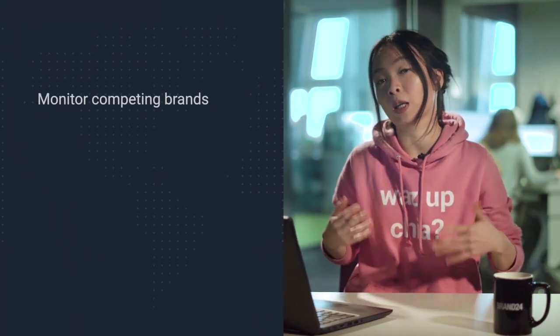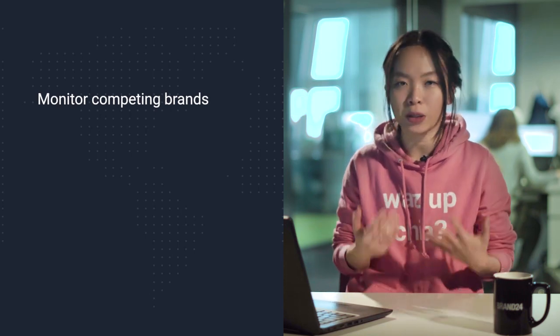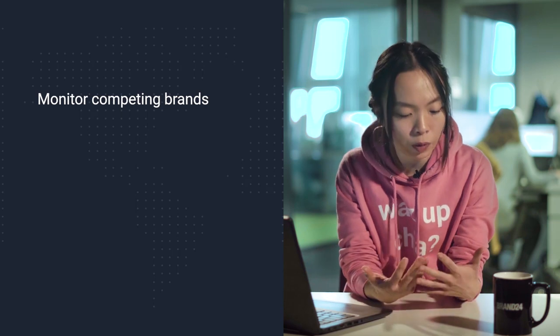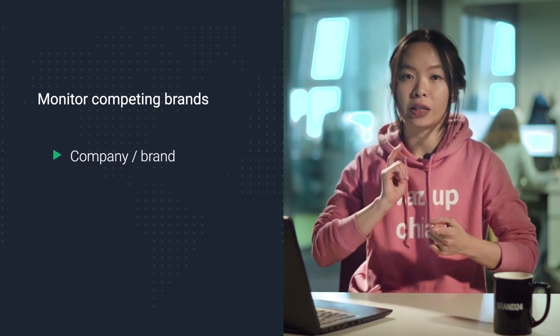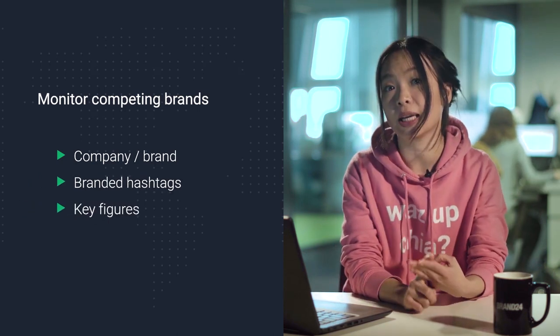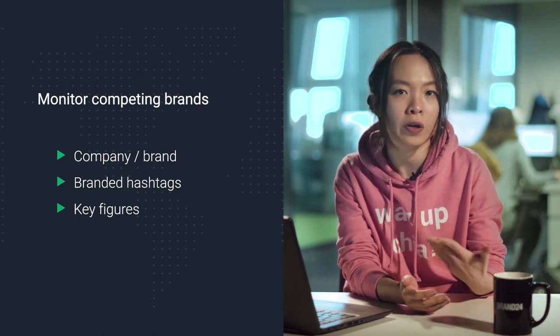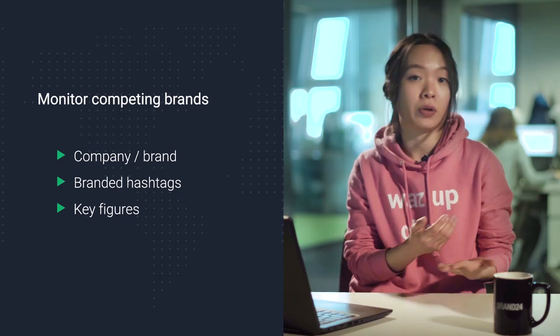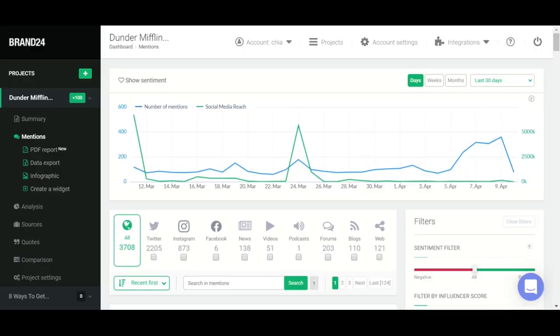This is the final section of our course, and it is where we take everything we just learned and apply it to your competitors. By monitoring brand mentions for your main competitors, you can measure how your brand reputation compares to theirs. Approach this exactly as if you were monitoring your own brand — monitoring the name of the company, their branded hashtags, and mentions of key figures closely associated with their brands, like their CEO, PR staff, brand ambassadors, and influencers. If you're following along inside Brand24, make sure you create a separate project for each brand so you can use the comparison function later to automatically compare major metrics between your respective brands.